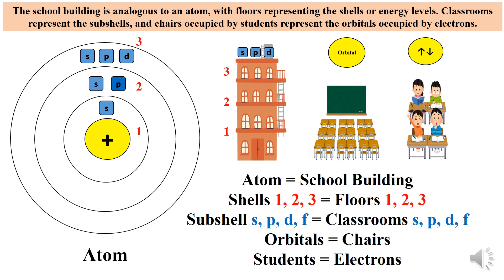The atom represents the school building, the shells of the atom represent the floors of the building, the subshells represent the classrooms, the orbitals represent the chairs in the classroom, and the chairs occupied by students represent the orbitals occupied by electrons.